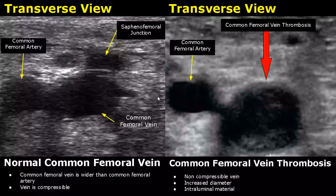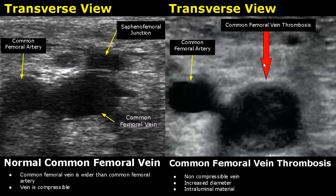Here we see a thrombus in the common femoral vein. The vein will be non-compressible, which means when we apply pressure from the probe it will not collapse. The diameter of the vein will also be increased. The lumen is filled with some material — that is the thrombus.